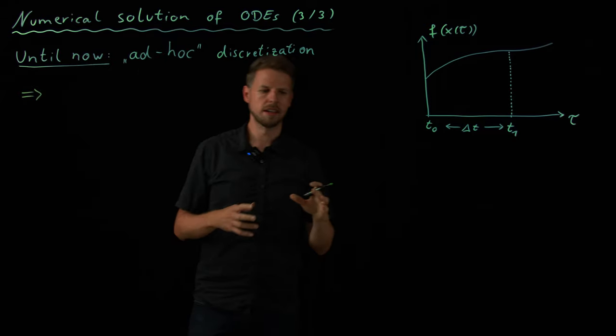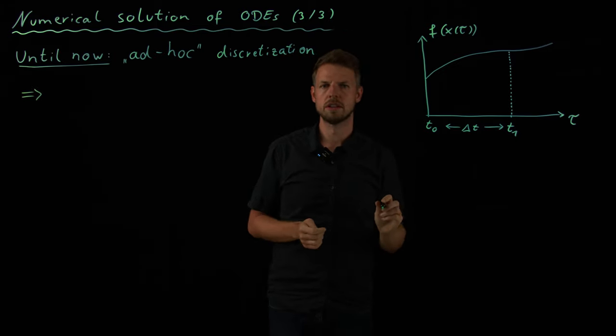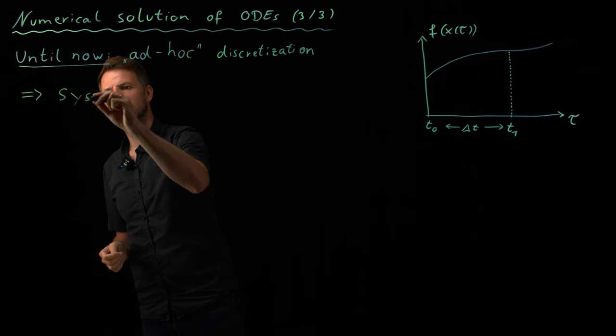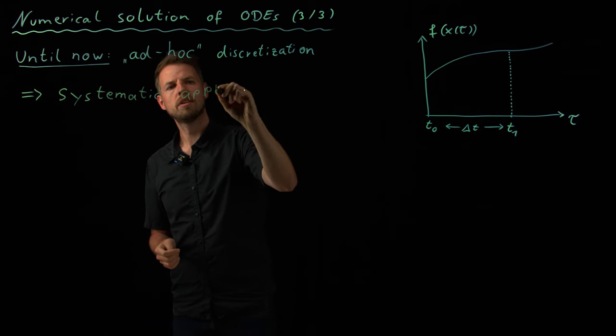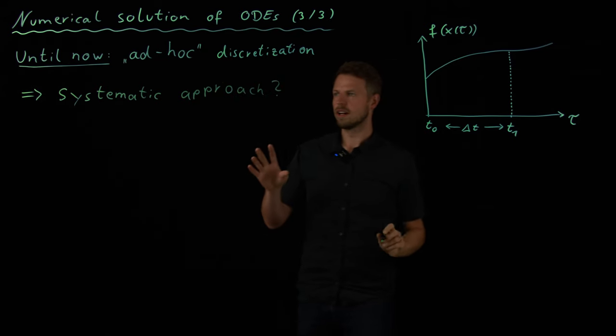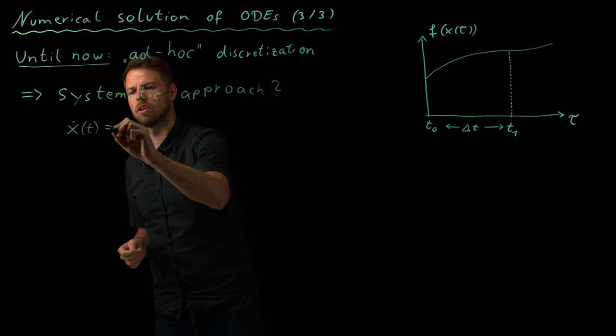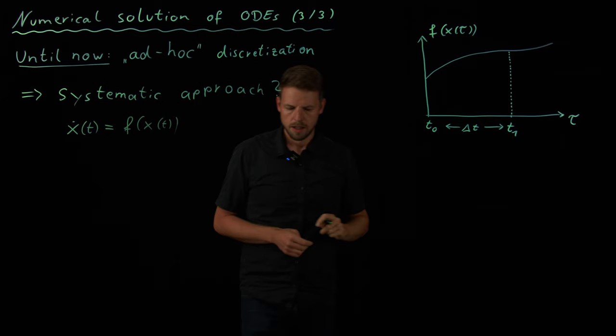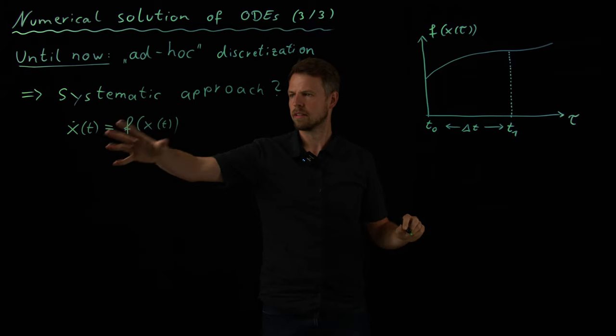And by this, find, let's say, a family of schemes that allow us to choose approximation qualities as we wish. So, the question that we are going to address in this video is, is there a systematic approach to this discretization? So, where we start is, this is always the problem, x dot is equal to f of x at time t. And the question is now, how do we get this more systematic viewpoint to get a rule for updates?